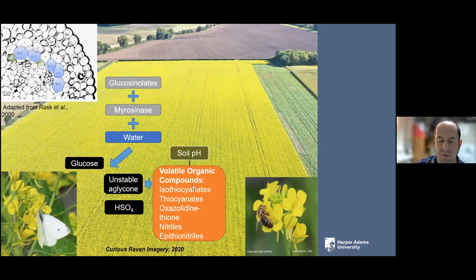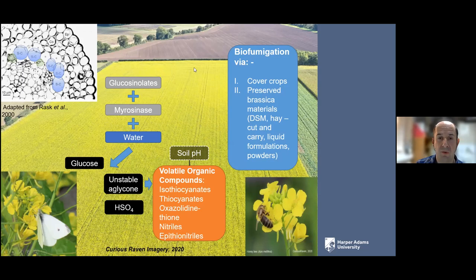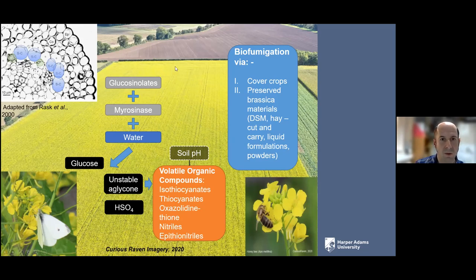Soil pH is important — if the pH is low, below 5, you can get more nitriles, which are other types of volatile organic compounds. These nitriles are also biocidal but very quick to volatilize and disappear from the soil. Biofumigation can be achieved either through the cover crop or by applying preserved products in the form of defatted seed meals. Some people have created a type of hay using a cut-and-carry system, or liquid formulations where defatted seed meals are combined with vegetable oil and fed through drip irrigation — that's been used to treat root knot nematodes on tomatoes in Italy.